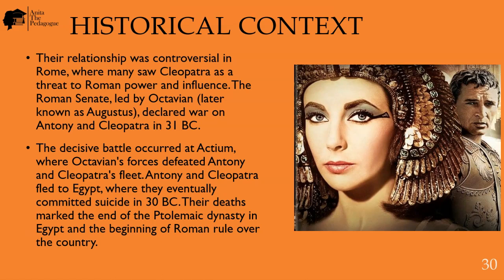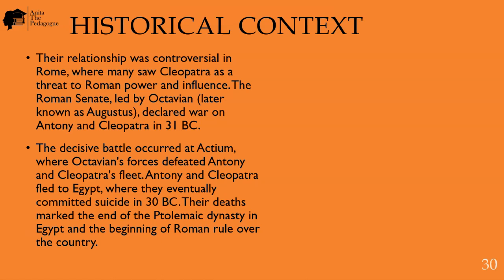Their deaths mark the end of the Ptolemaic dynasty in Egypt and the beginning of Roman rule over the country. This brings us to the end of the historical context. In this playlist you will find a summary and analysis of Act One to Act Five — kindly check it — as well as the characterization and the themes.